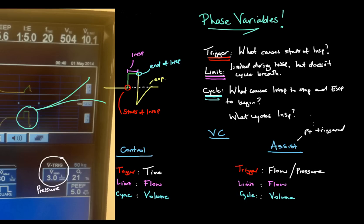In this video we looked at trigger variables — what triggers the breath to start — limit variables — what's limited during the breath but doesn't cause the breath to end — and cycle variables — what causes inspiration to end and expiration to begin. These are called phase variables and they're going to be pretty important when we start to look at all sorts of different modes of mechanical ventilation.